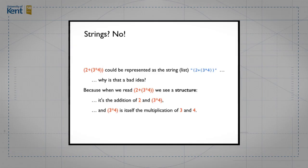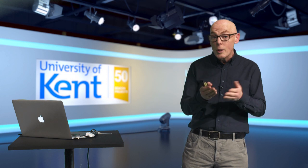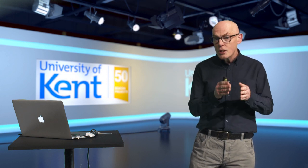Well, because what it doesn't do is represent the structure that we see inside that expression. We see it's an addition of 2 and 3 times 4, and we see that 3 times 4 is itself a multiplication. So there's a structure there. Whereas what we see in the string is a parenthesis and a 2 and a plus and a parenthesis and so on. It's just a sequence of one character after another. Whereas in fact, there's that structure that we see through the string to the structure.